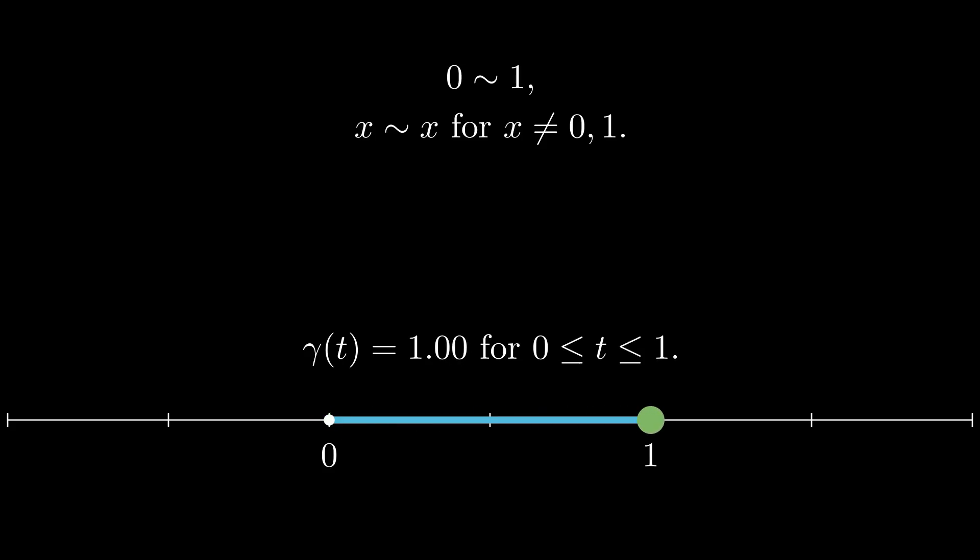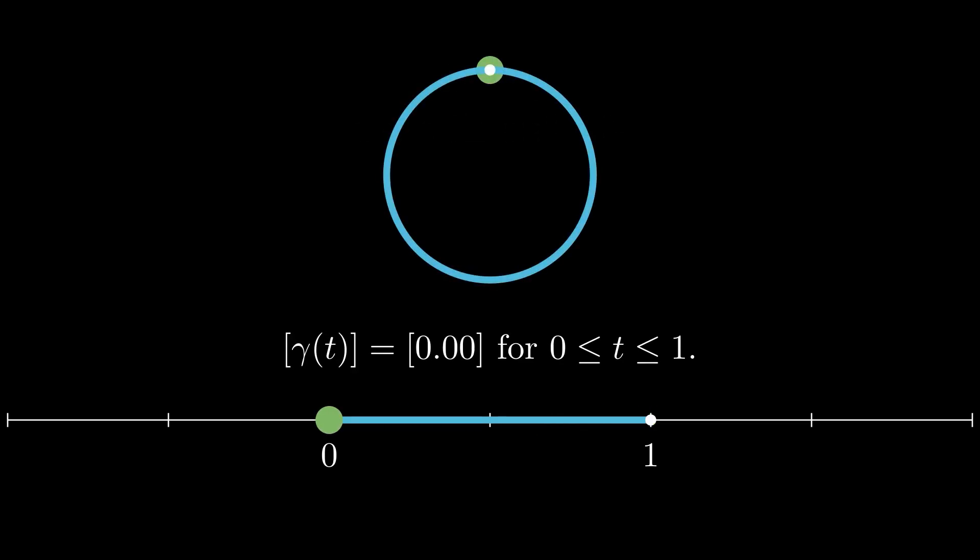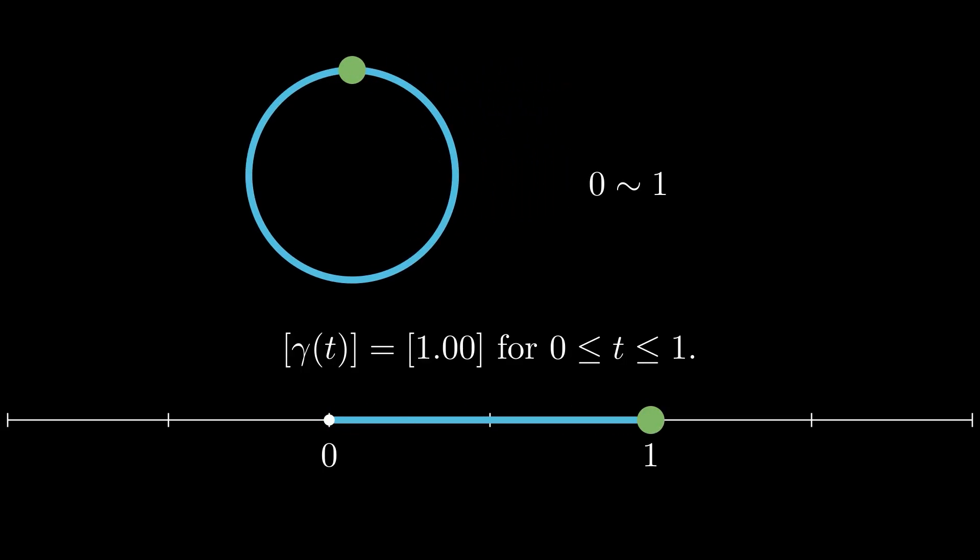To see why this is, think about a path on the line from 0 to 1. Let's call this path gamma. Now look what happens when I add the brackets of an equivalence class to the path gamma. The path travels from 0 to 1 as before, but when it reaches the point 1, we know that 1 is related to 0.